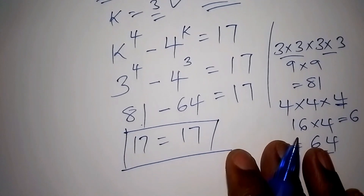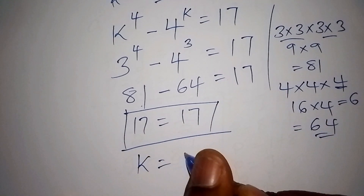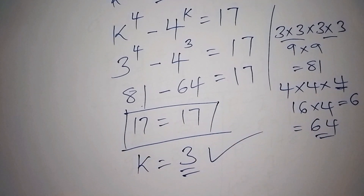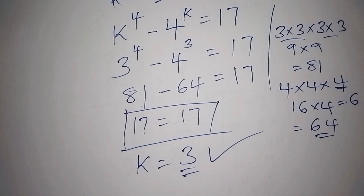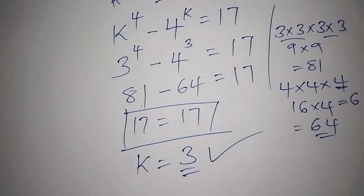We conclude that the value for k is 3. If you enjoyed how we worked out this math problem, please give us a thumbs up and subscribe if you haven't subscribed to our channel. See you in the next video. Thank you.